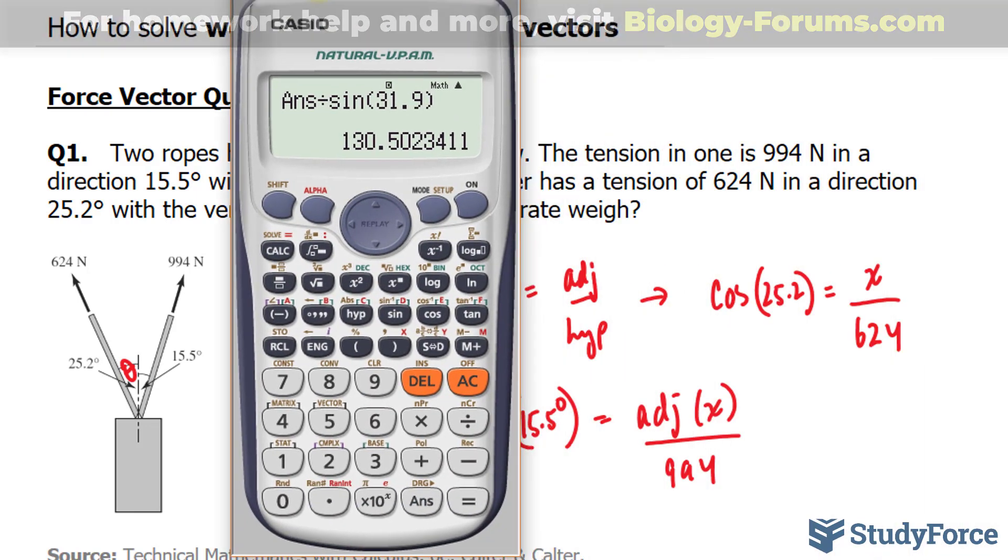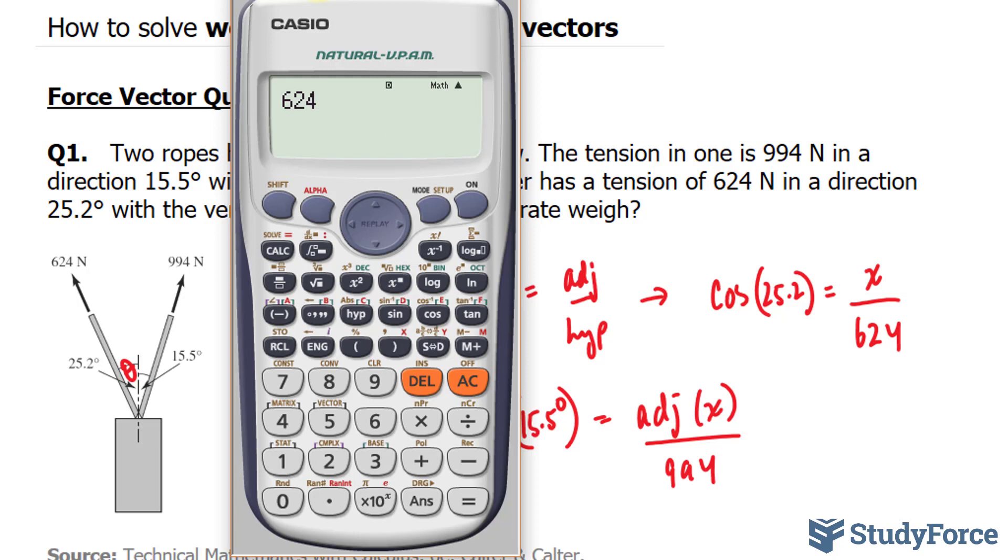Let's start with this one. Make sure that your calculator is in degrees because we are working with degrees. To find x, I multiply both sides by 624. So I have 624 times cosine of 25.2. And this gives us an x value of 564.6.